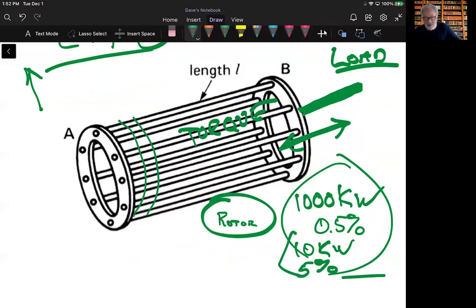So basically, although there is some variation across here, these machines are called asynchronous because there is a difference between the field speed and the rotor speed, so they're not in sync, so they're called asynchronous.